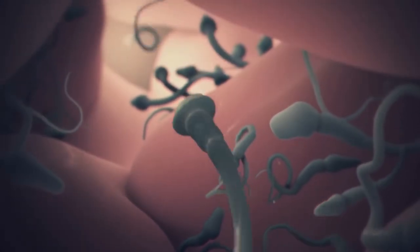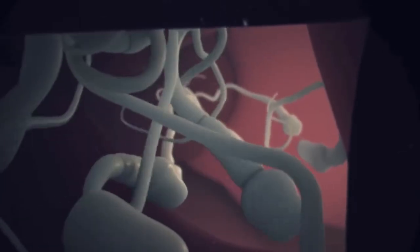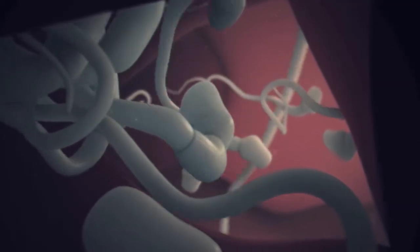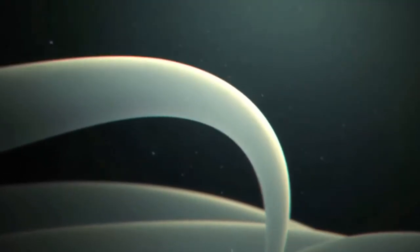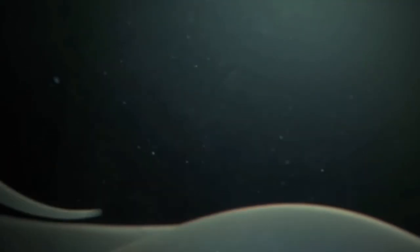Once inside the cervix, the sperm continue swimming toward the uterus, though millions will die trying to make it through the mucus. Some sperm remain behind, caught in the folds of the cervix, but they may later continue the journey as a backup to the first group.